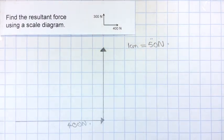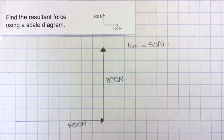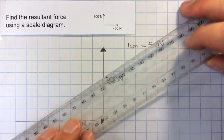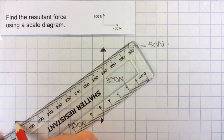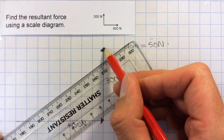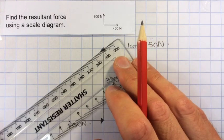I should label that as well. And now to find the resultant force, I should draw in the resultant force starting from the start of the first vector and finishing at the end of the second one, where the arrowhead is.